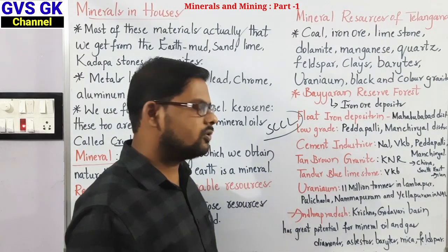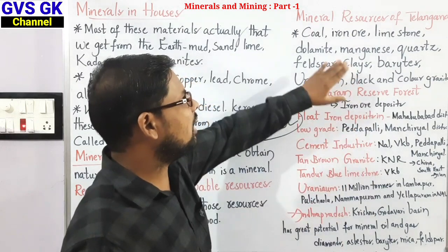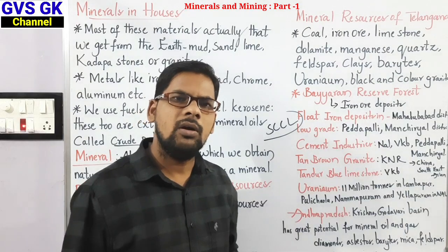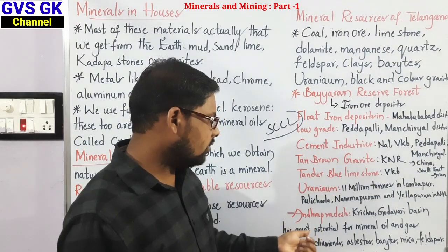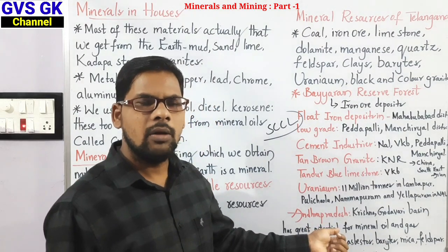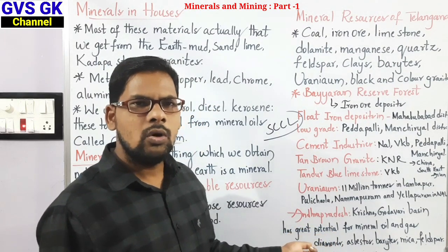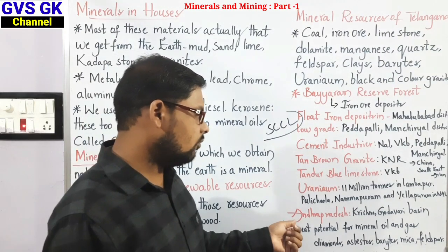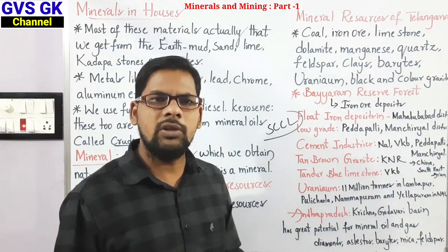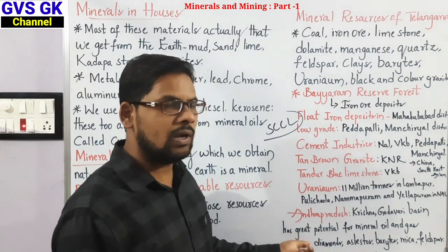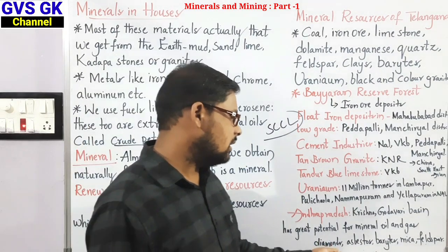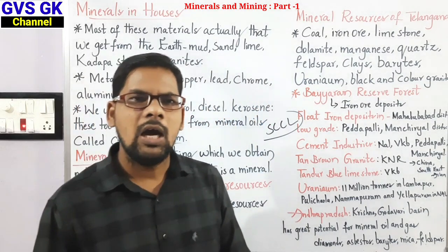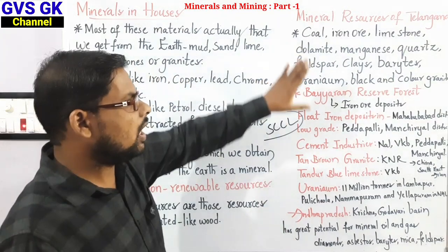Coming to the mineral resources of Andhra Pradesh — it is also famous for coal, iron ore, limestone and dolomite, manganese, quartz, and various other minerals. There is great potential for mineral oil and gas resources due to proximity to coastal and ocean regions. The Karnataka-Andhra Pradesh border is famous for iron ore exports to Southeast Asian countries. Kurnool, Anantapur, and other districts are famous for diamonds. Asbestos, mica, and feldspar are also available in Andhra Pradesh.